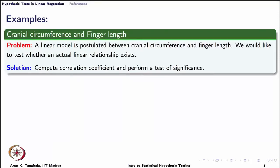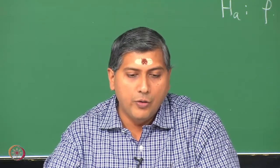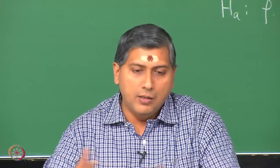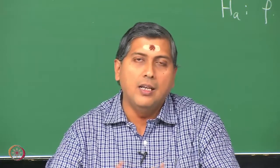Let us look at an example now and see how we can do this in R. This is an example we discussed in the motivating lecture. Recall that there was a widespread belief that there is a relation between the cranial circumference — the circumference of the head — and the finger length. This belief was held for a few centuries, and now we want to see if there is a linear relation between cranial circumference and finger length.